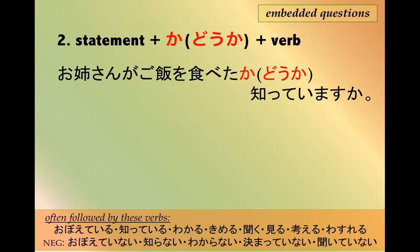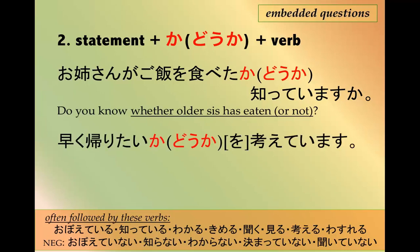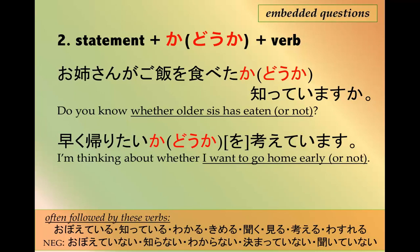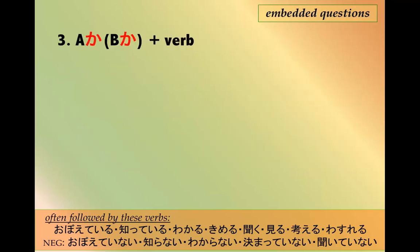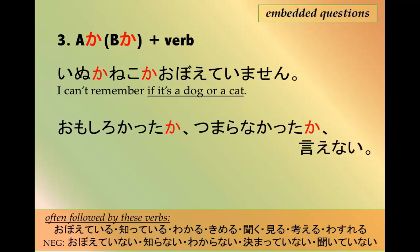Examples of pattern two: おねえさんがごはんを食べたかどうか知ってますか — 'Do you know whether older sister has eaten or not?' And: 早く帰りたいかどうか考えてます — 'I'm thinking about whether I want to go home early or not.' Then pattern three: A か B か + verb. For example: 犬か猫か覚えていません — 'I can't remember if it's a dog or a cat.' And: 面白かったかつまらなかったか言えない — 'I can't say if it was interesting or boring.'